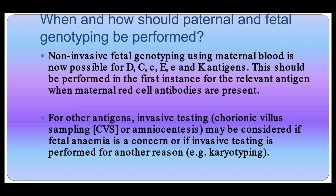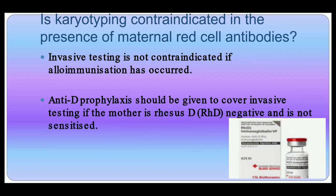Non-invasive fetal genotyping using maternal blood is now possible for antigens D, C, small-c, E, small-e, and K — but not capital T. This should be performed in the first instance for the relevant antigen when maternal red cell antibodies are present. Invasive testing such as CVS or amniocentesis may be considered if fetal anemia is a concern or if invasive testing is being performed for another reason such as karyotyping. Importantly, anti-D prophylaxis should be given to cover invasive testing if the mother is RhD negative and not sensitized.